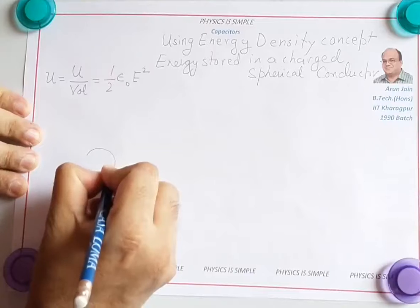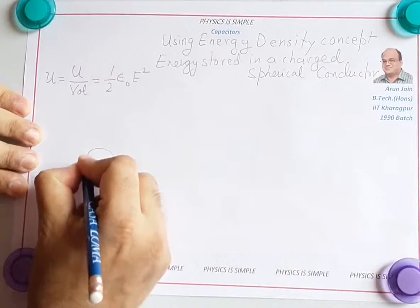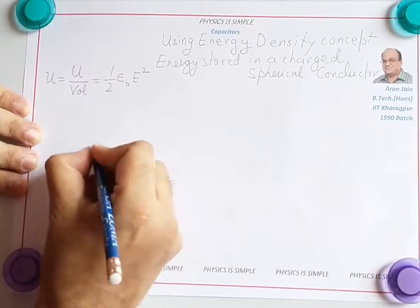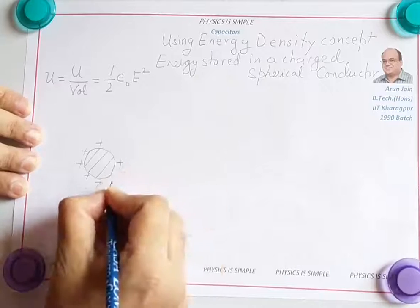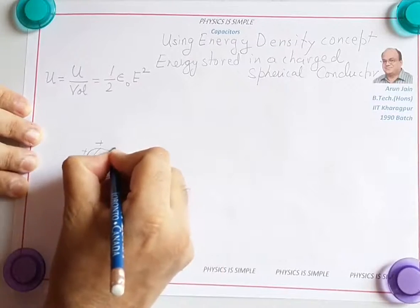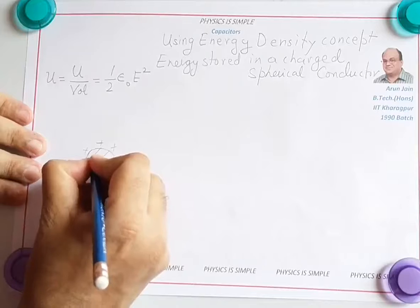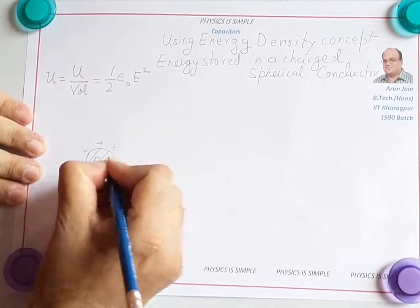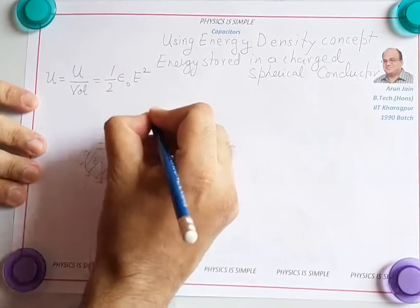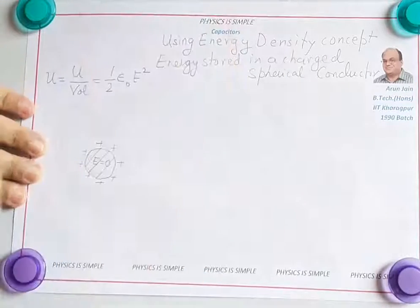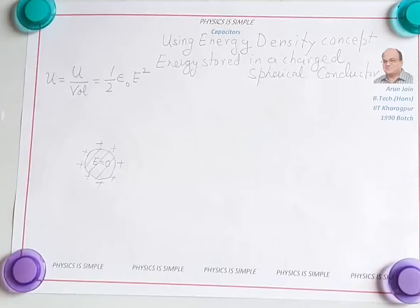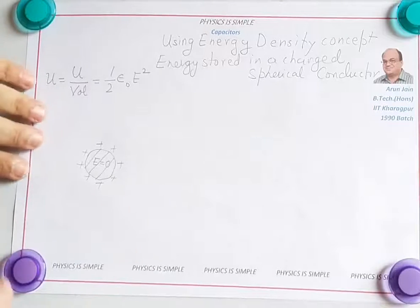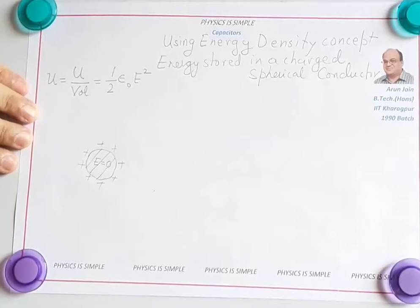We have a spherical conductor that is charged. The charge will go to the outer surface and get uniformly distributed because this is a conductor. The electric field inside the conductor will be zero, and the electric field outside will extend from the surface to infinity. We need to find the energy stored in this electric field, which equals the energy stored in the charged spherical conductor.